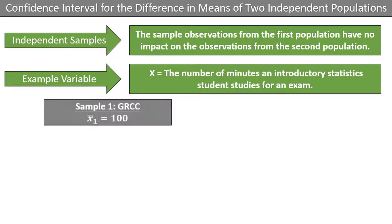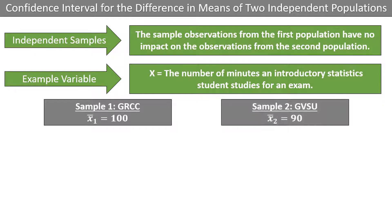We may have one sample that reveals that Grand Rapids Community College students study an average of 100 minutes, and a second sample that reveals that Grand Valley State University students study an average of 90 minutes. We assume these samples are independent, as they come from different schools and should not affect each other in any way.